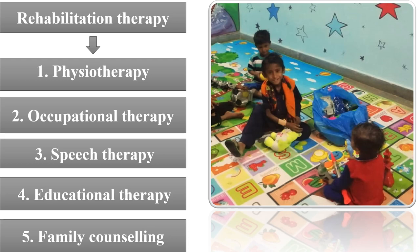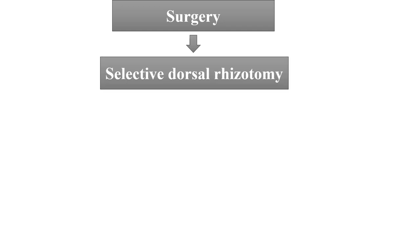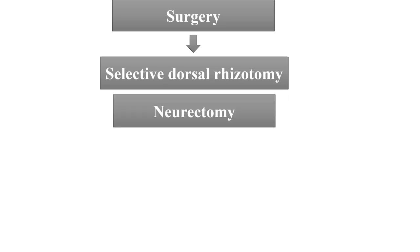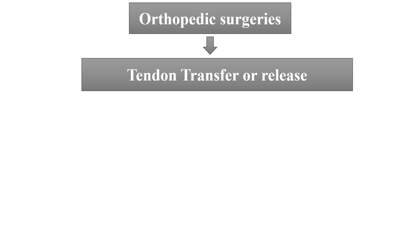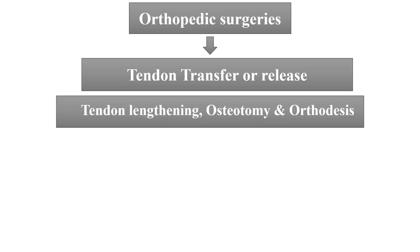Surgery is required in very severe patients having spasticity and contracture after few years of medical and rehabilitation therapy. Selective dorsal rhizotomy involves lumbar laminectomy between L2 to L5. Neurectomy involves removal of a nerve. Neurolysis uses phenol or alcohol blocks to disrupt nerve signal transmission to the brain; chemical neurolysis is generally preferred. Orthopedic surgeries include tendon transfer or release, adductor tenotomy, tendon lengthening, osteotomy, and arthrodesis.